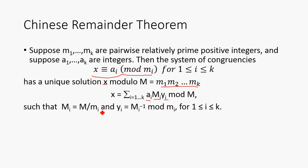So what is this M sub i and y sub i? Well, M sub i is going to be this big M divided by the small m sub i, or the modulus that we're working with. Then y sub i is going to be the modular inverse modulo this small modulus m sub i, for each one of those i from 1 through k.